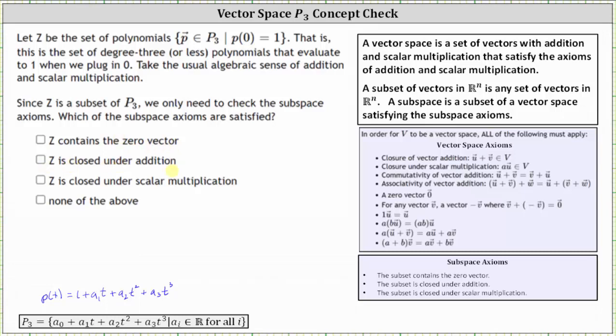Next, Z is closed under addition. Let's consider the sum of two polynomials that we know are in the subset Z. Let's say, for example, 1 plus t² plus, let's say, 1 plus t plus t³. Again, notice how both of these polynomials will be in the subset Z because they're in the form of P(t) shown here where the constant is 1. And notice the sum is 2 plus t plus t² plus t³. This polynomial is not in the subset Z because notice how here the constant is 2, not 1. And therefore, Z is not closed under addition. We do not check the box.